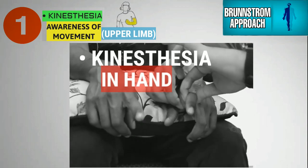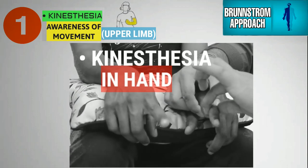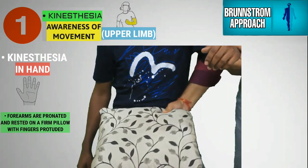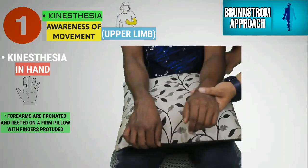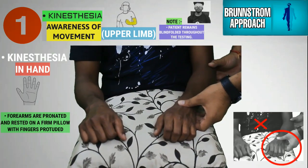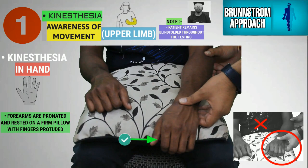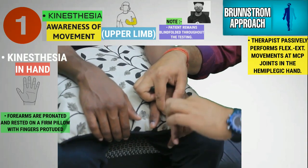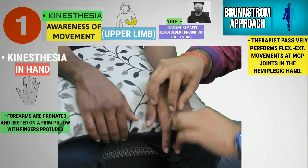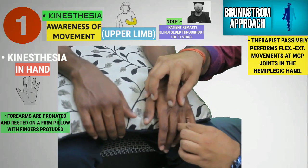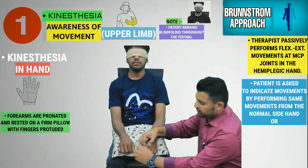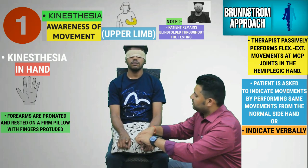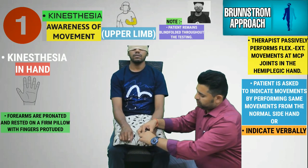The therapist now checks for kinesthetic and proprioceptive sensation in the fingers of the hemiplegic hand. The patient's forearms are pronated and made to rest on a firm pillow in the lap, with the hands placed so that the fingers are protruding over the edge of the pillow. The therapist passively moves the fingers of the hemiplegic hand at the metacarpophalangeal joint in the flexion and extension direction. The patient is asked to indicate when finger motion is felt by stating its direction as up or down.